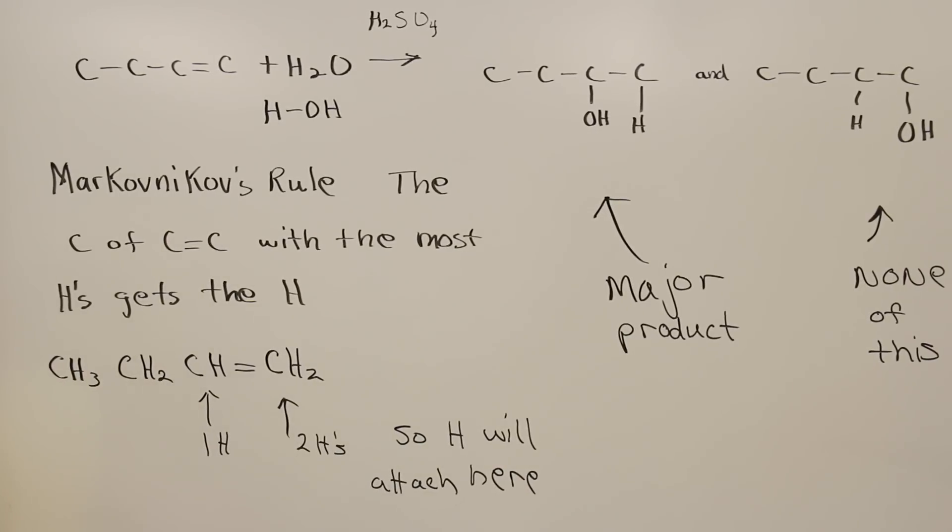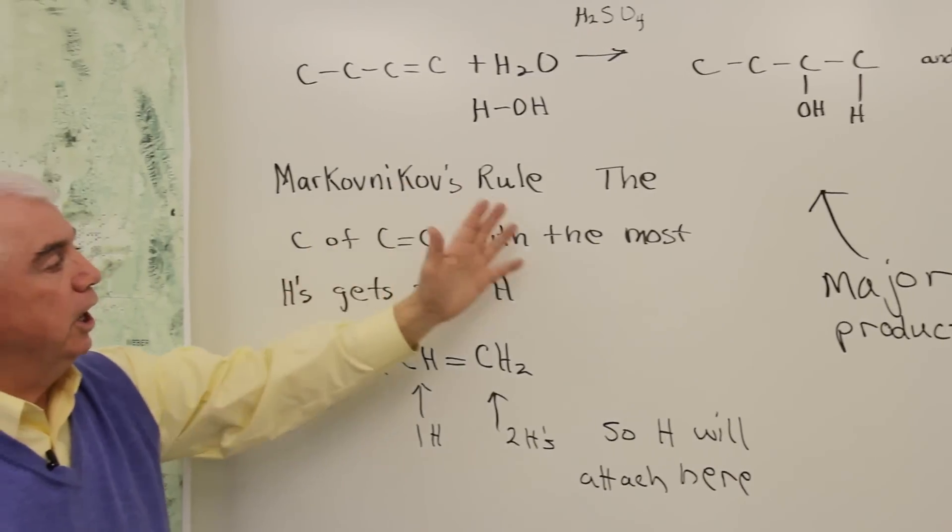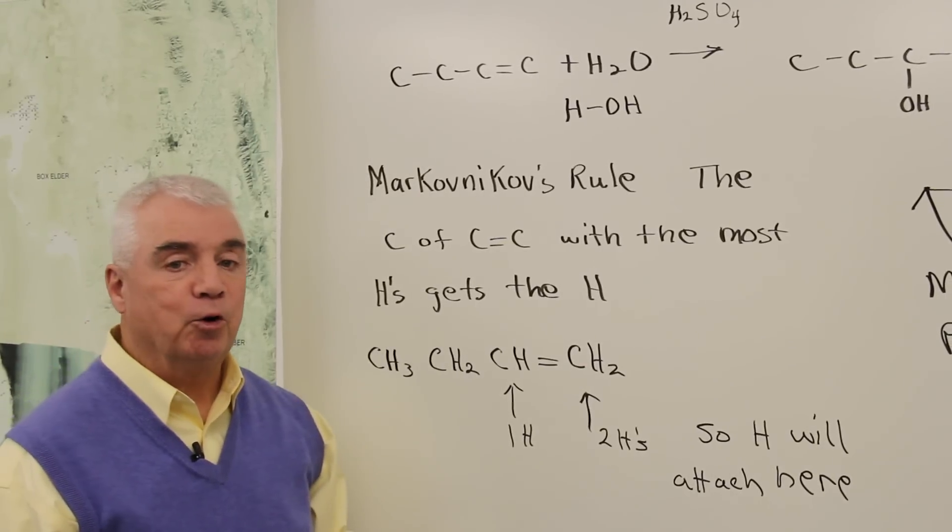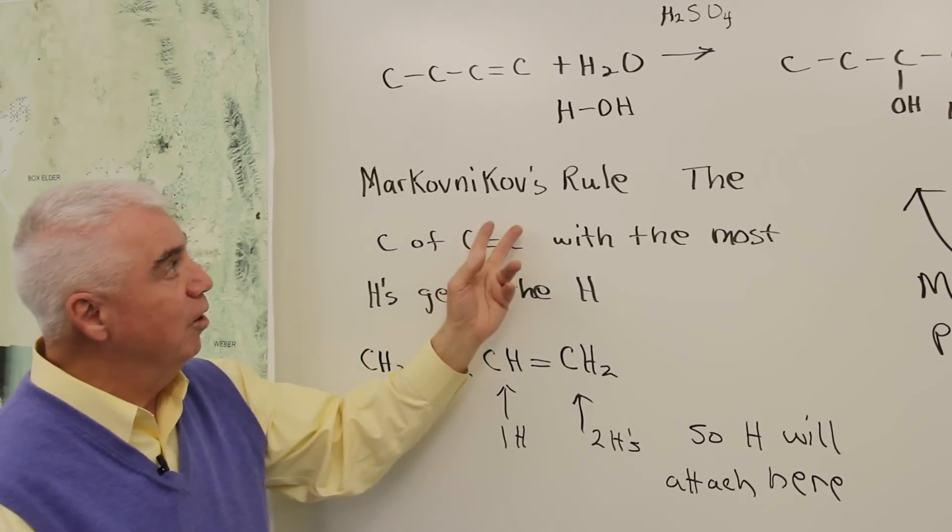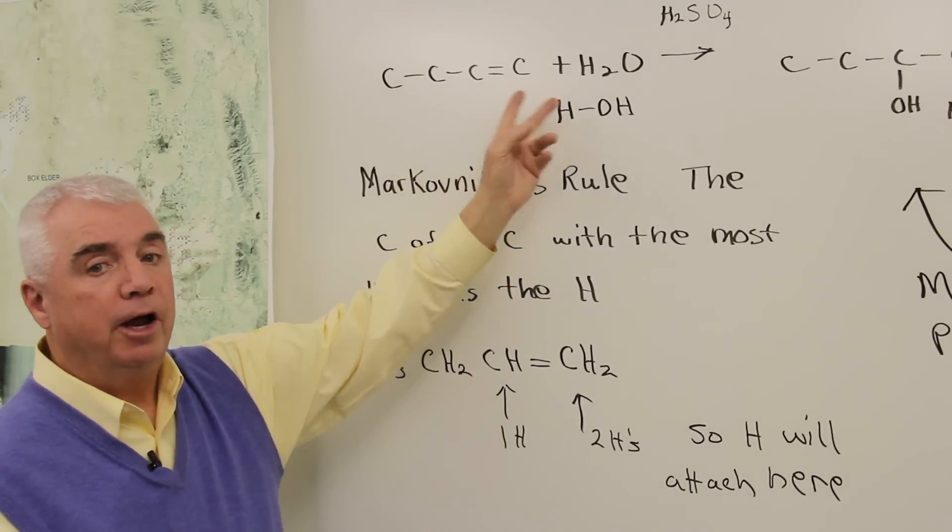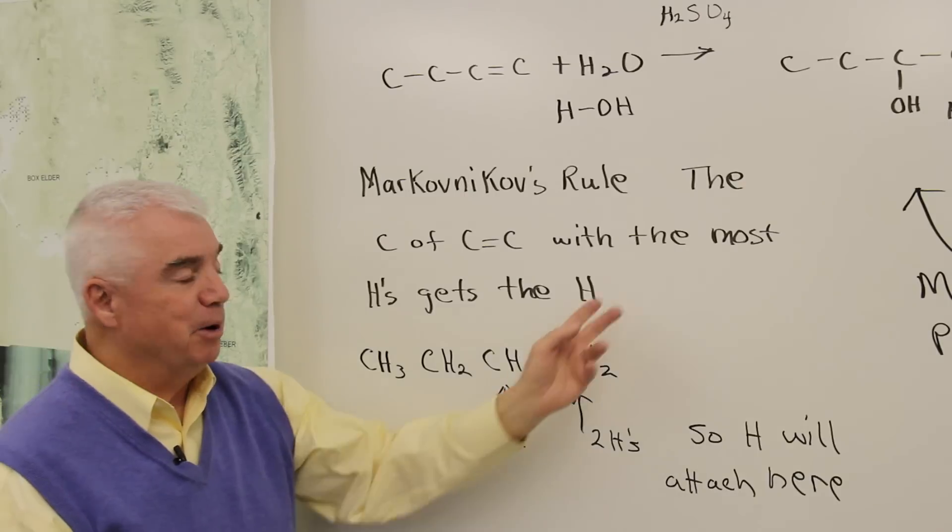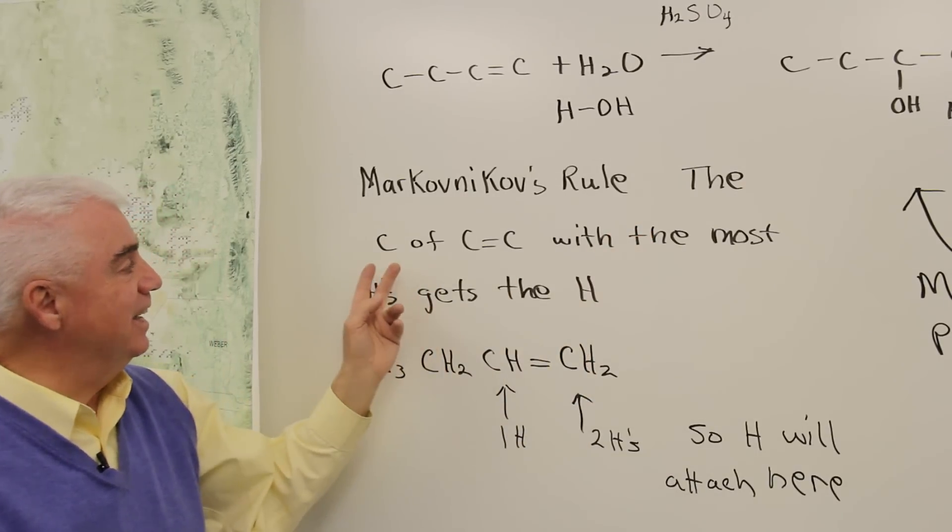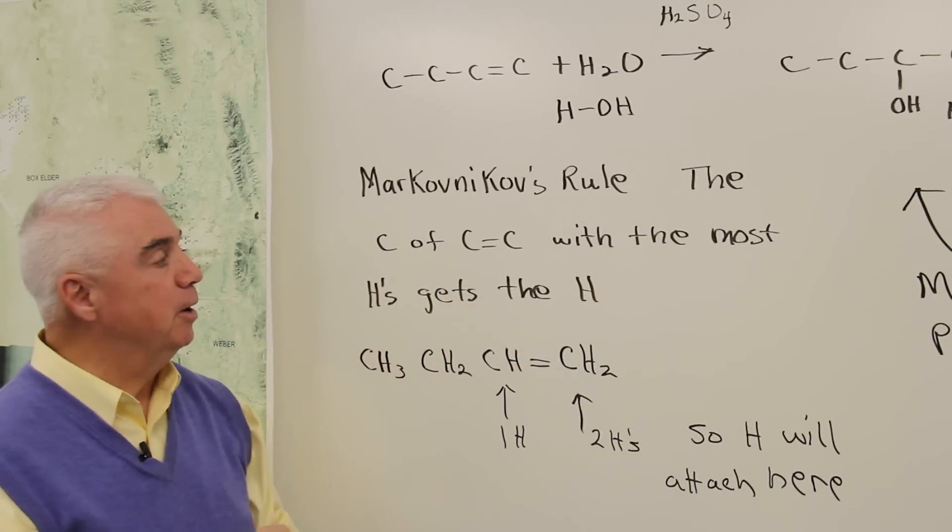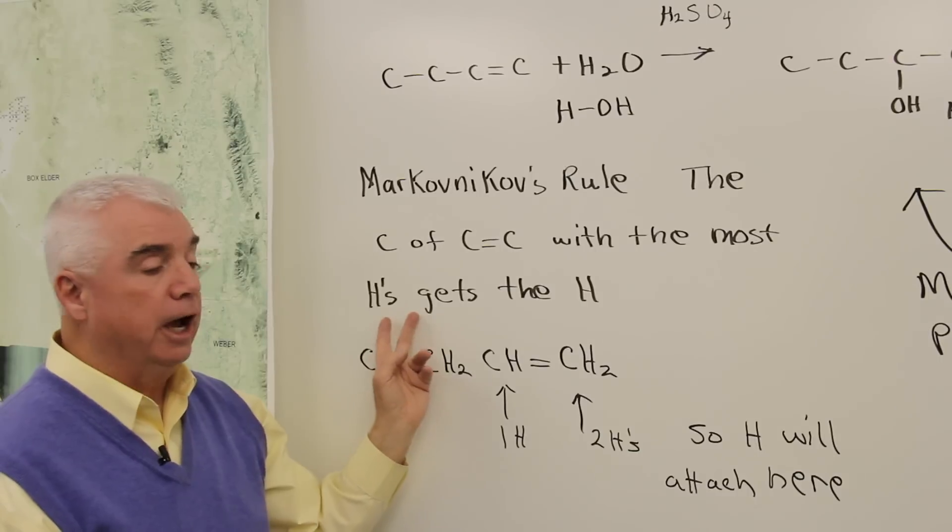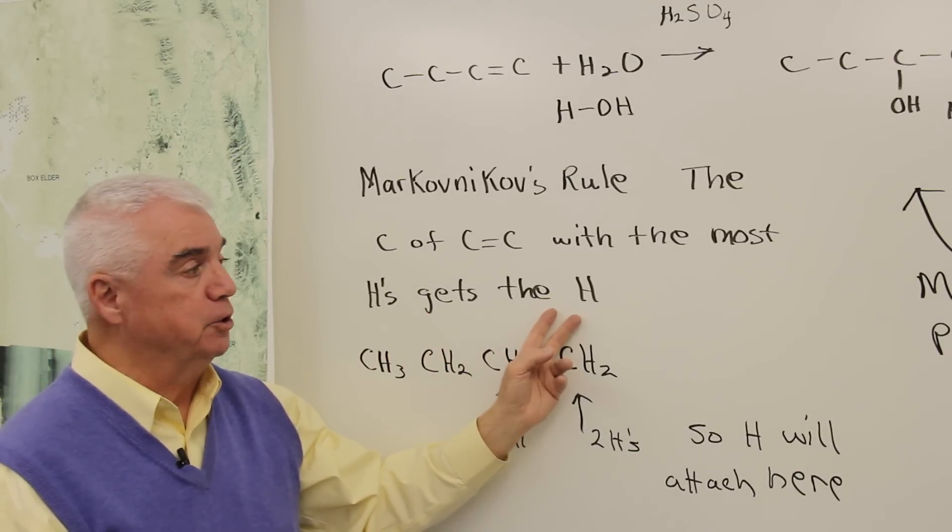A scientist by the name of Markovnikov realized this, and we have now the Markovnikov rule for predicting the product when we add water to a carbon-carbon double bond. And to paraphrase the rule a little bit, it says the carbon of the carbon double bond with the most hydrogens is the one that gets the new hydrogen.